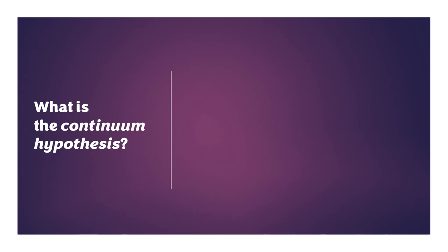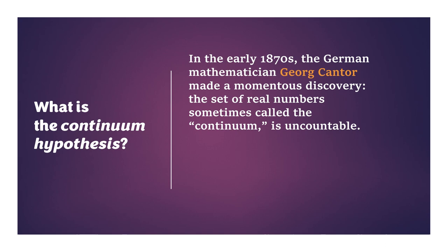What is the Continuum Hypothesis? In the early 1870s, the German mathematician George Cantor made a momentous discovery. The set of real numbers — such as 5, 17, square root of negative 2, pi, and so on — sometimes called the Continuum, is uncountable. According to him, there is not just only one infinite; both natural and real numbers are infinite. He also proved that the reals have greater cardinality than the naturals.